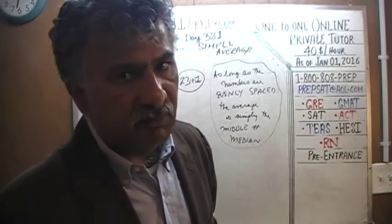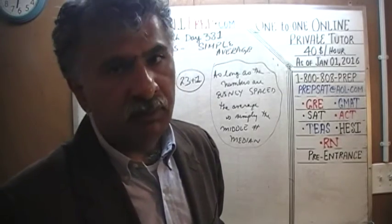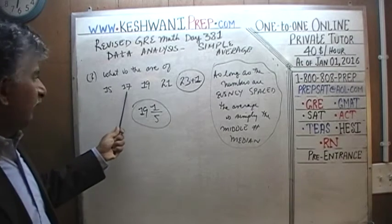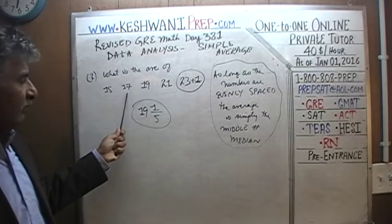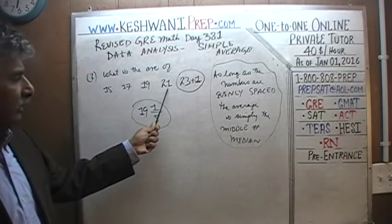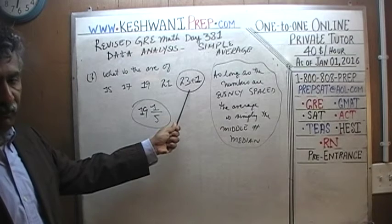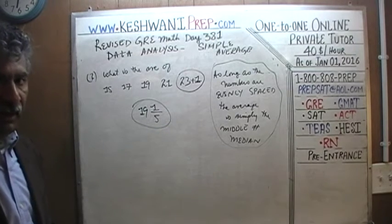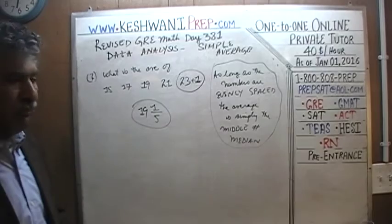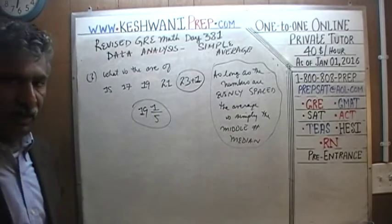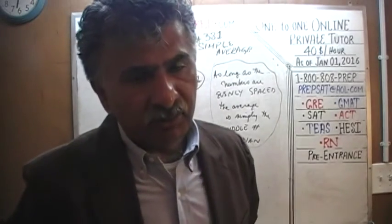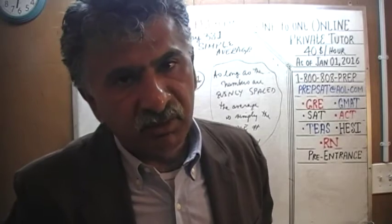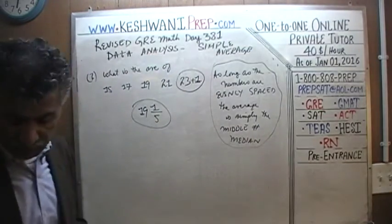Think of this in terms of money if it makes it easier for you. The first person has $15, the second $17, then $19, then $21. Had the last person had $23, the average would have been $19. But he has $24 — a dollar extra. Take that dollar extra and divide it equally among the five people, giving us an average of 19 and one-fifth.